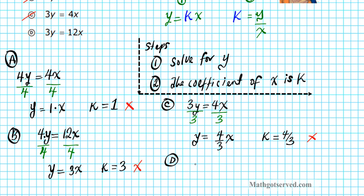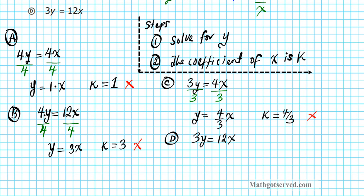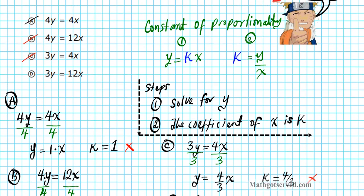Last but not least, option d. We have 3y equals 12x. We follow steps 1 and 2: divide by 3 to get y by itself and find the coefficient of x. Dividing both sides by 3, the 3s divide out and y equals 12 divided by 3, which is 4x. The constant of proportionality is the coefficient of x — what you're multiplying x by — and that is 4. So k equals 4, and our answer is option letter d.